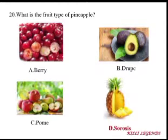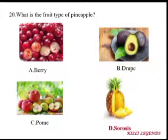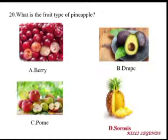Berry and drupe fruit types: drupe is avocado; pome is in case of apple; berry fruit is in case of cherries.